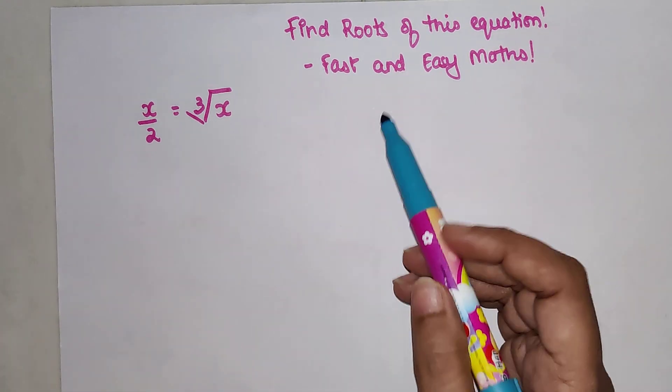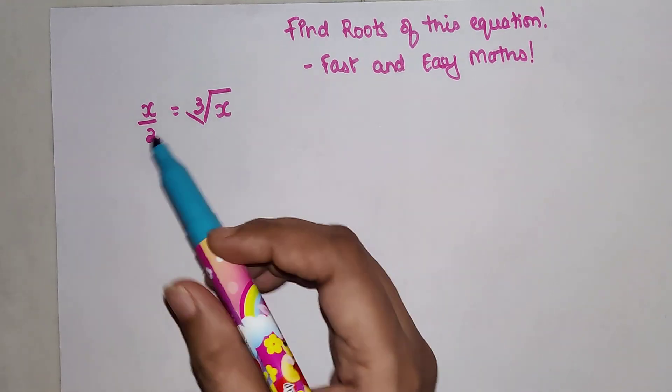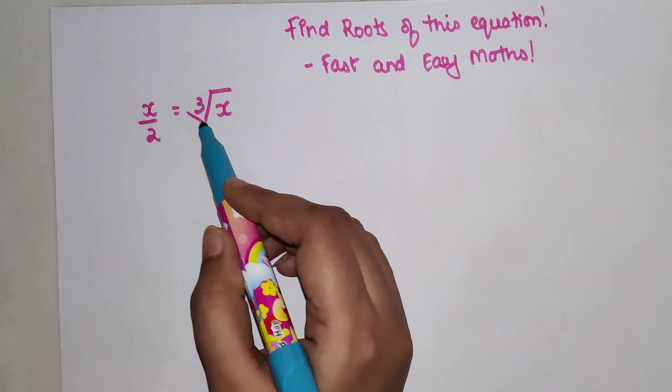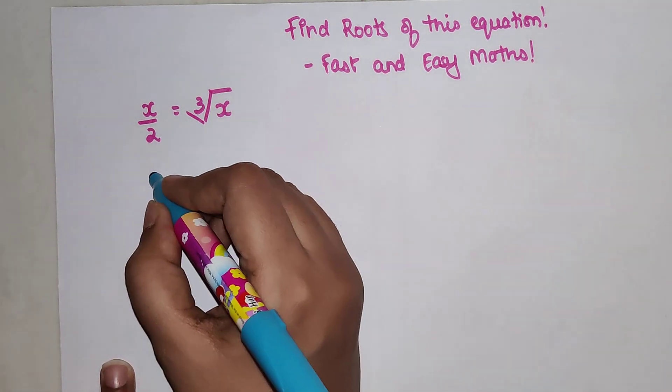So here the question is: find roots of this equation. The question is x/2 equals cube root of x. In such a case what we can do is let's write this as x equals, let's take the 2 on this side, 2 times cube root of x.